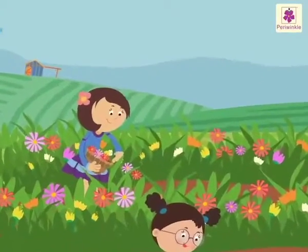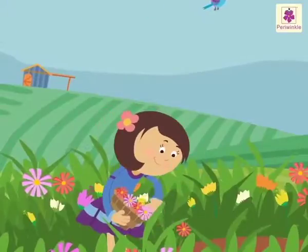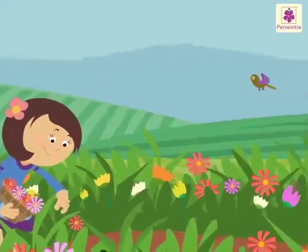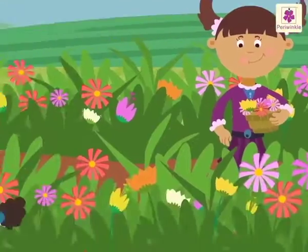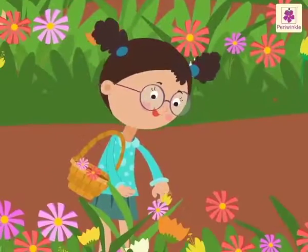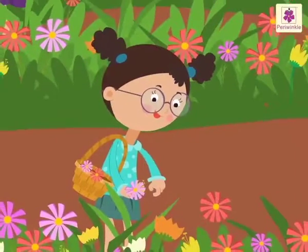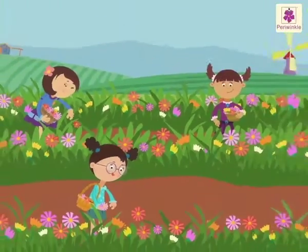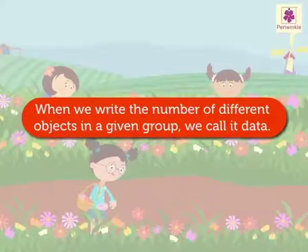Look at the flower farm. Simi collected five flowers. Sanya collected seven flowers. And Suzanne collected four flowers from the farm. When we write the number of different objects in a given group, we call it data.